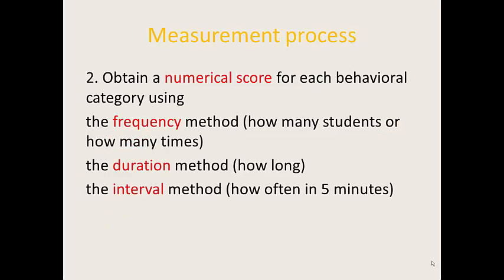The second step is to obtain a numerical score for each behavioral category. You can do this by using the frequency method — for example, how many students are involved in this behavior. The duration method measures how long each student or group of students is involved. And you can also use the interval method, which measures how many times or how often something happens in a given time interval, like per minute or per hour.